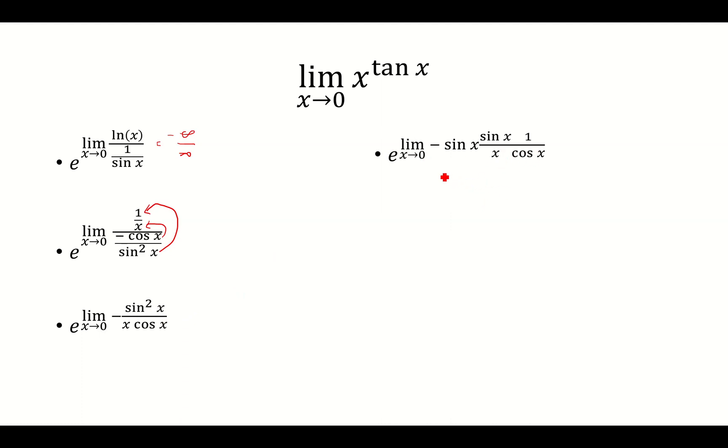Notice that this limit is 1, this limit is also 1, and then this is 0. So you have 0 times 1 times 1, that's going to be 0. e to the 0 is 1, and so that is our final answer.